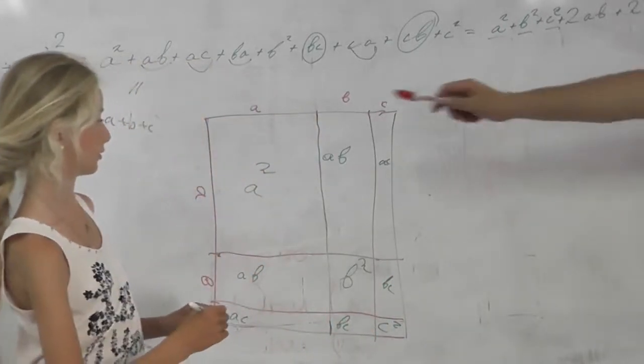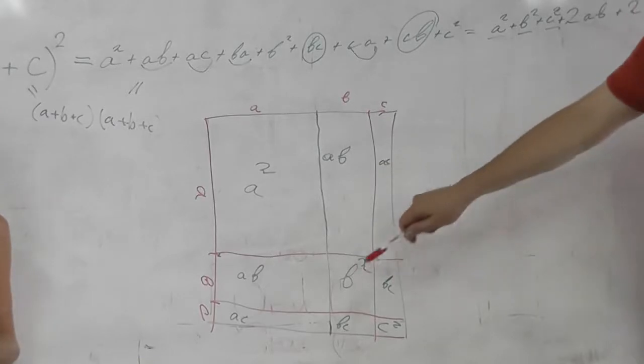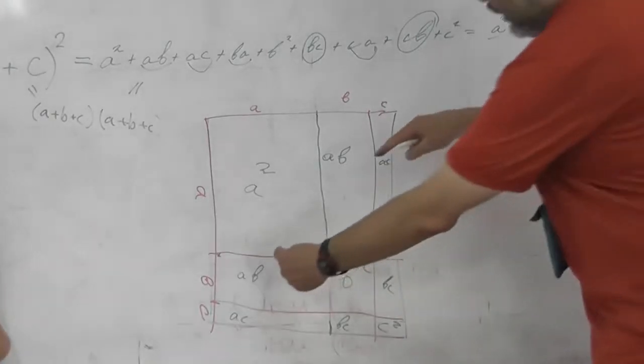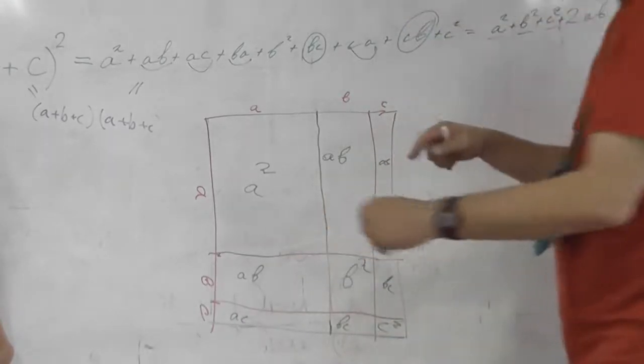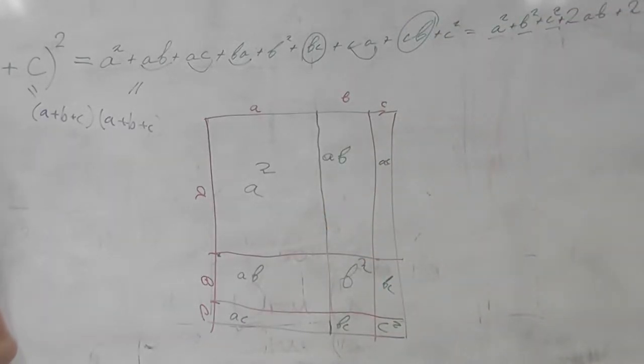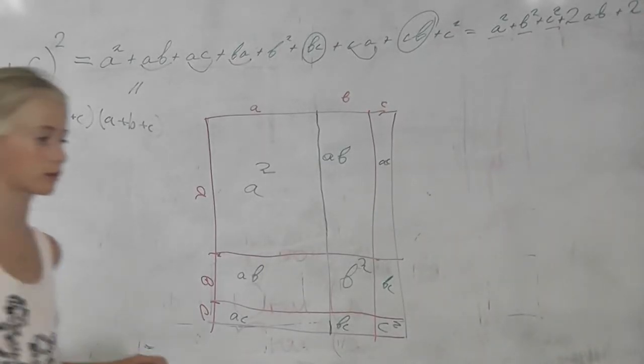So we see a², b², c², 2ab, 2ac, and 2bc. So here is the formula. And here is the picture which illustrates. Great. Thanks.